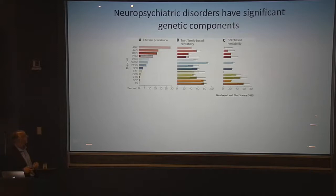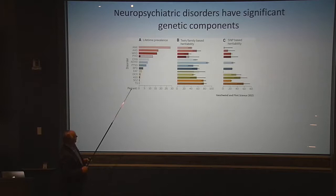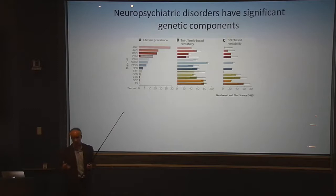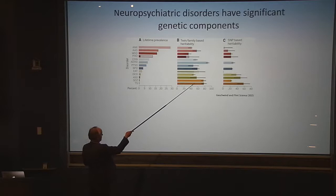Neuropsychiatric disorders have significant genetic components. Schizophrenia and autism affect around 1% of the population; anxiety, major depression, and ADHD have very high prevalence. The heritability based on family studies is predicted to be very high — for autism, around 60%, ranging from 40 to 80%; for schizophrenia, much tighter confidence bounds from larger studies.